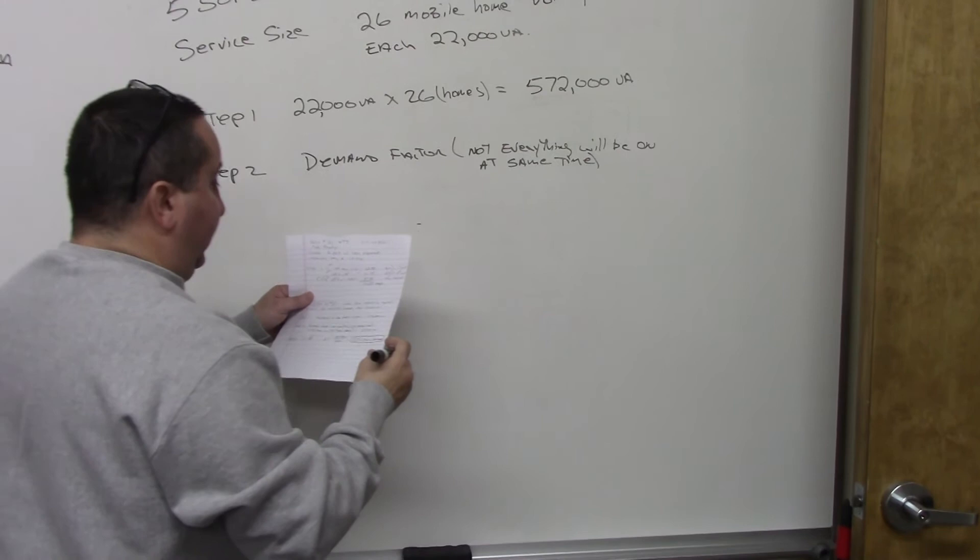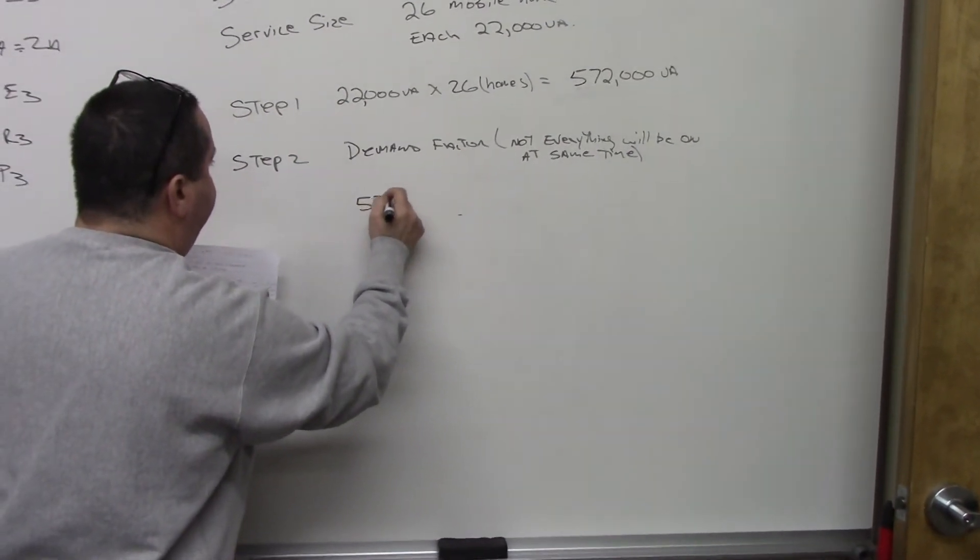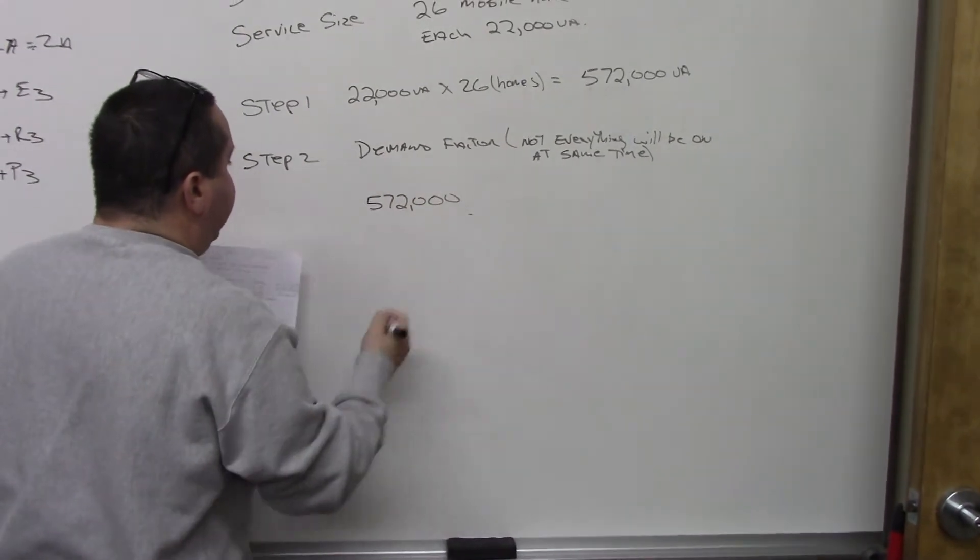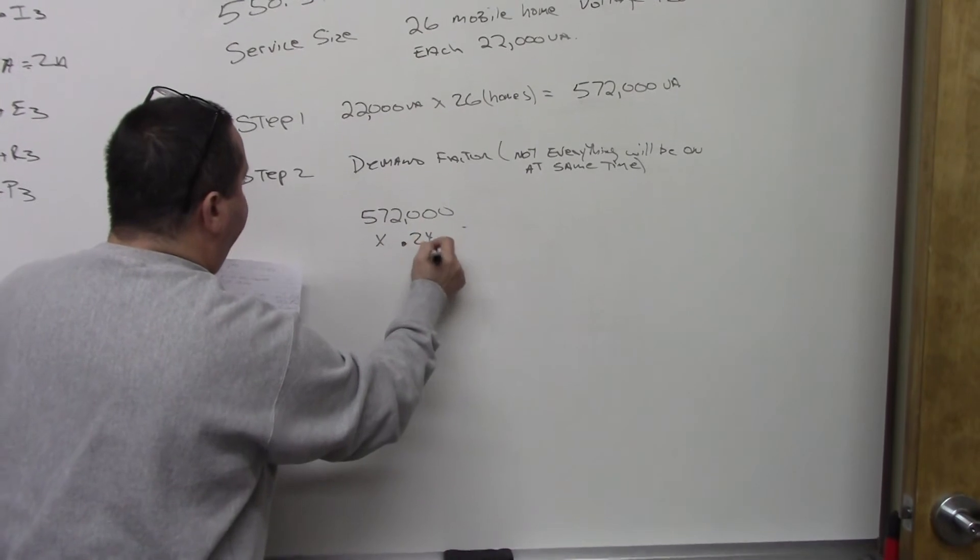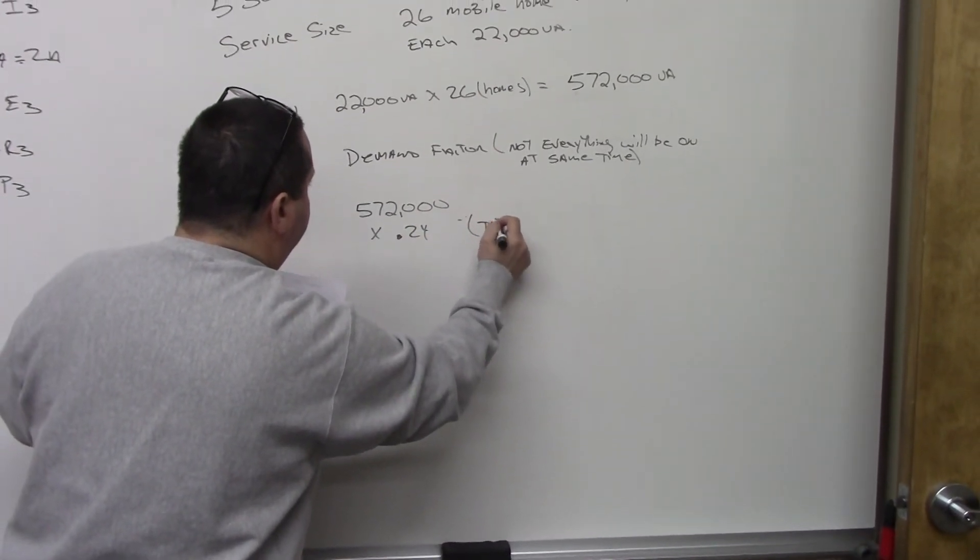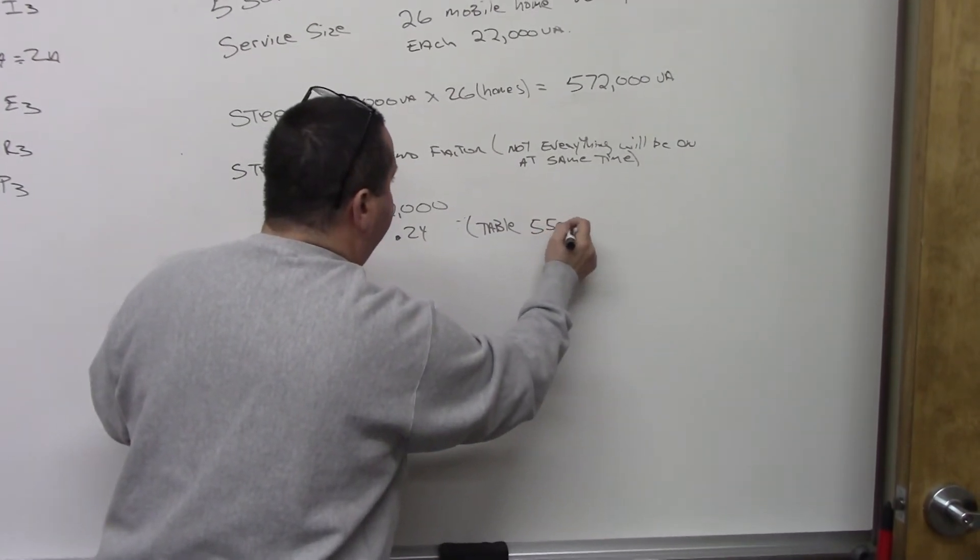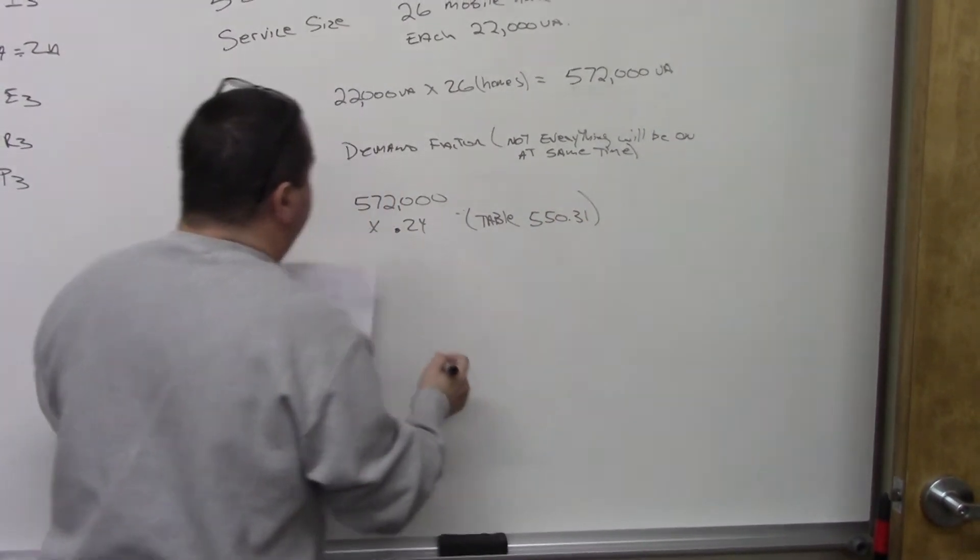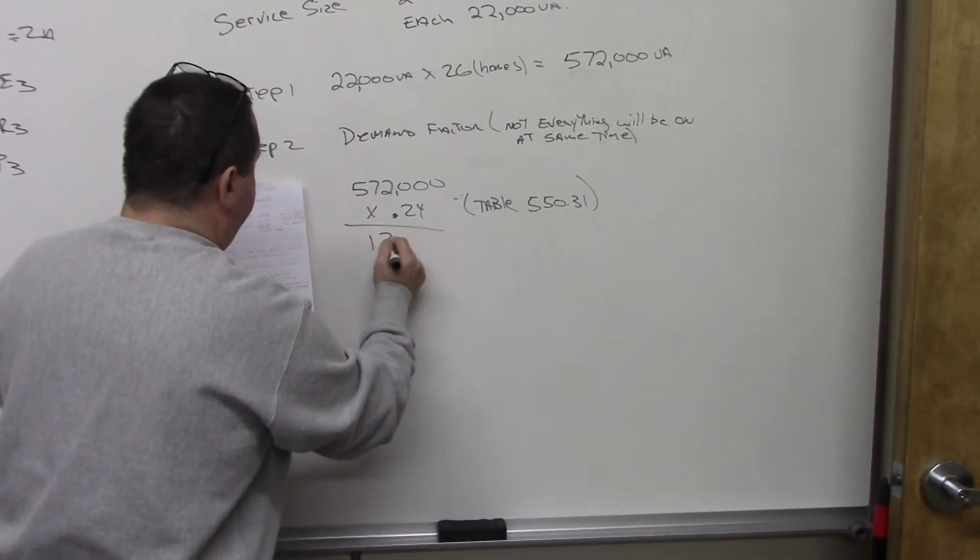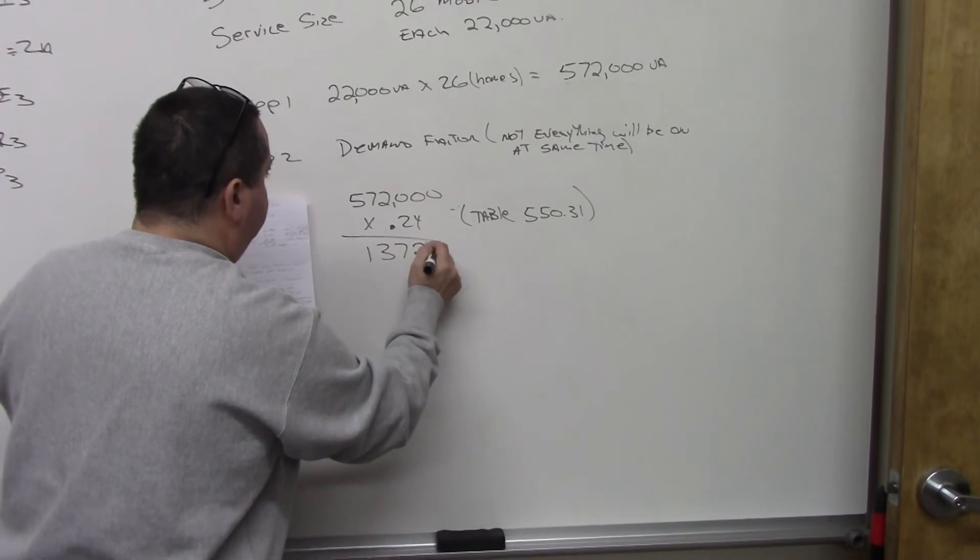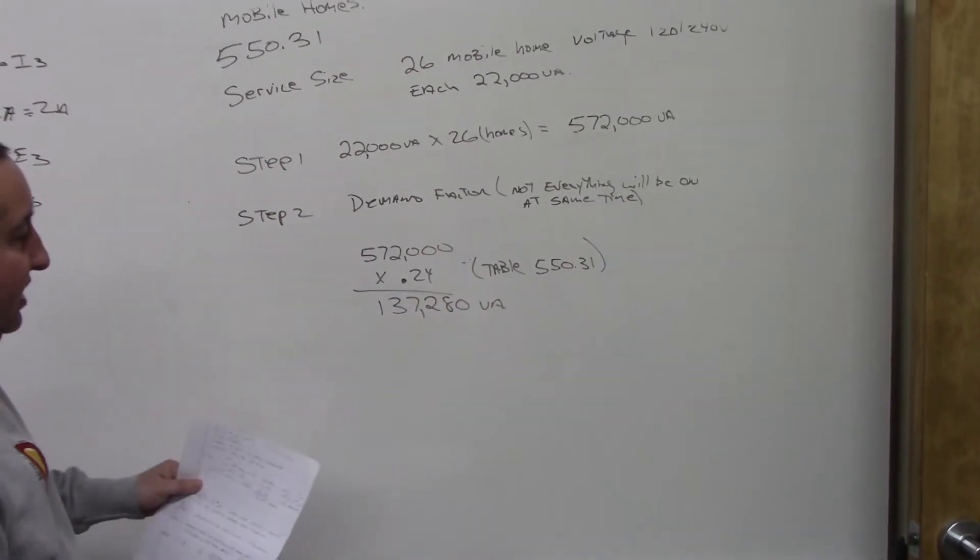So let me just explain. So you're going to take the 572,000 and there's a demand. And the demand for this is 0.24. That's table 550.31. And if we do this, we come out with 137,280 volt amps.